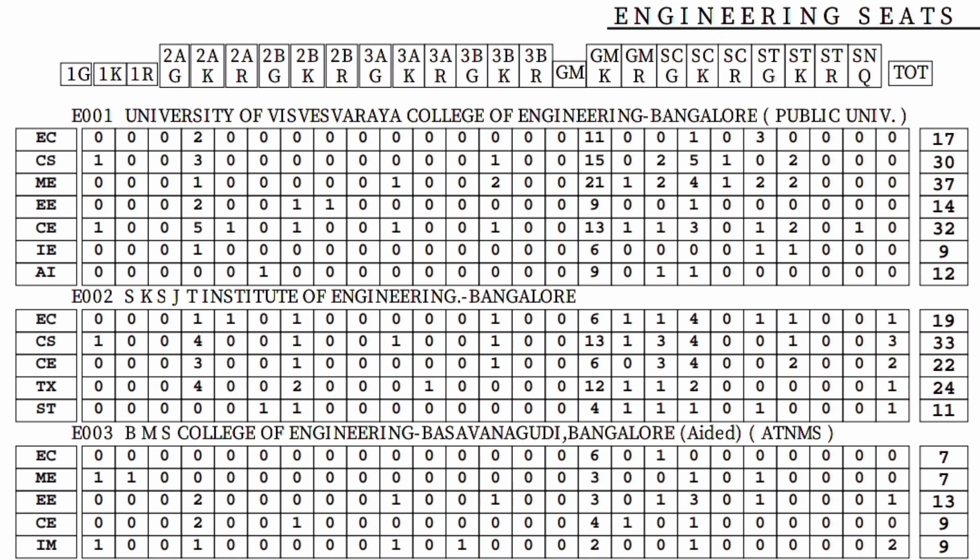Similarly you can check college number E002, which is SKSJTI — Sri Krishna Jnanodaya Institute of Engineering, Bangalore. For EC, the general merit category shows 6 seats. CS for general merit shows 13 seats. Civil engineering CE for general merit shows 6 seats. Textile engineering TX shows 12 seats. Similarly you can read all the branches for different colleges.